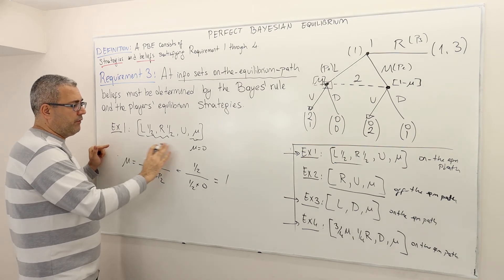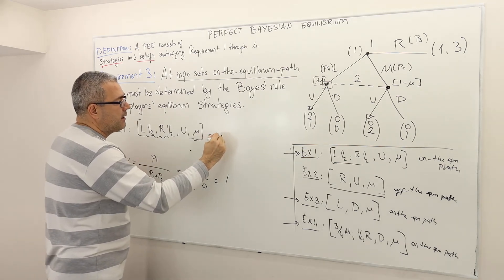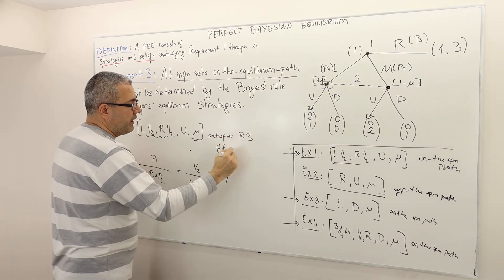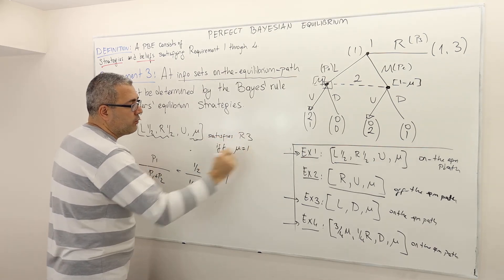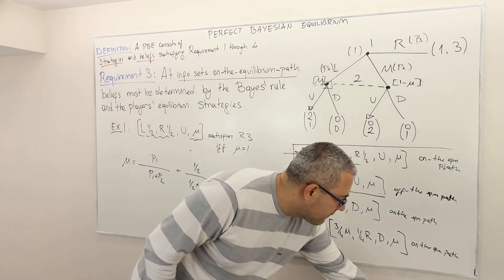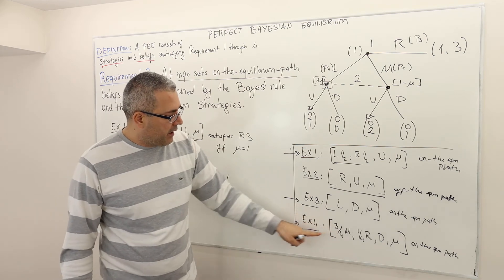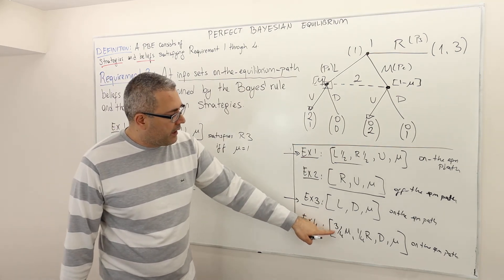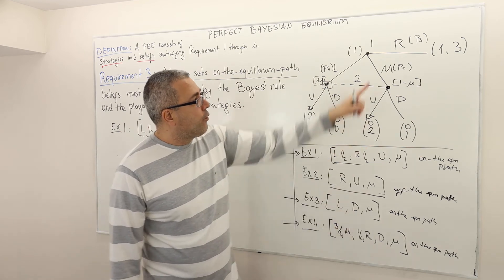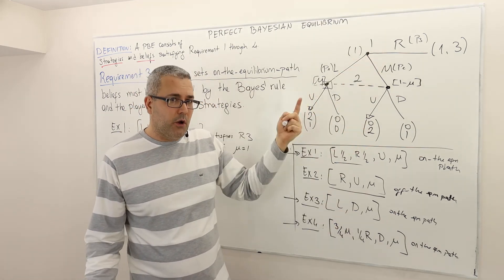So this strategy profile satisfies requirement three if and only if mu is equal to one. Very symmetrically, in example four — three-over-four M, one-over-four R — mu has to be zero. Let me quickly do that.